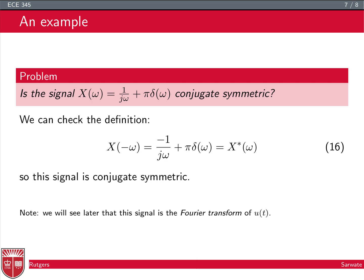As an example, consider x(ω) = 1/(jω) + πδ(ω). Plugging in −ω: x(−ω) = −1/(jω) + πδ(ω), since δ(ω) is centered at zero and stays at zero. This equals x*(ω) because only the sign of the imaginary part has switched. Therefore x(−ω) = x*(ω), confirming x(ω) is conjugate symmetric. We'll later see this is the Fourier transform of the unit step function.